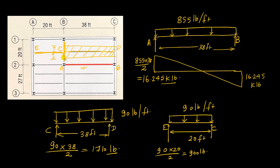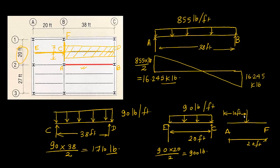Now we can calculate the load on the 20-foot girder. Let's call this girder AF. On AF there is a point load acting in the middle at 10 feet. The magnitude of this point load is the sum of the reactions coming from both sides — that is the reaction from one joist plus the reaction from the other, which equals 2,610 pounds. There will be reactions at both ends of the girder. This illustrates how we use the concept of tributary area to calculate loads on joists, girders, and even outer girders called spandrels.